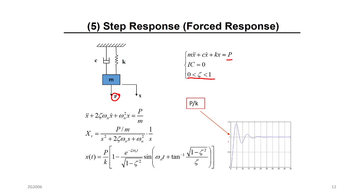There is an easier way — a sketch. All you need to know is where is the initial value from the initial value theorem, and how much is the final value from the final value theorem. You know where the function will start and where it will end. The rest will be similar to what we did in the underdamped case. The only difference will be the final value; the oscillation, the period, the damping, and the damped natural frequency will be exactly the same.